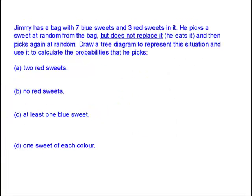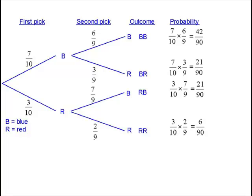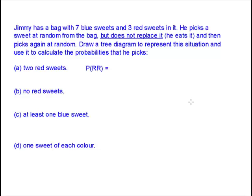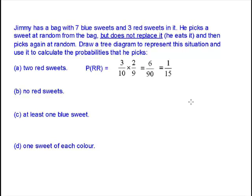Let's go to our question. What's the probability that he picks two red sweets? Well, that's this bottom row here. We've already seen how that works. The answer is 6 ninetieths, which we can cancel down to 1 fifteenth if we wish.